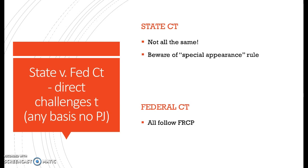One thing to watch for are state courts that follow the special appearance rule. This means you have to make a special appearance in court to challenge lack of PJ and lack of PJ only. If you bring up anything else, you are considered to have turned that appearance into a general appearance and thereby consented to jurisdiction in that forum. So you can't bring up the merits — only lack of PJ.